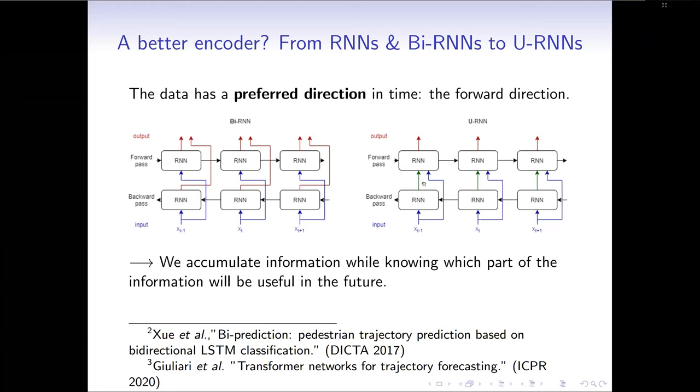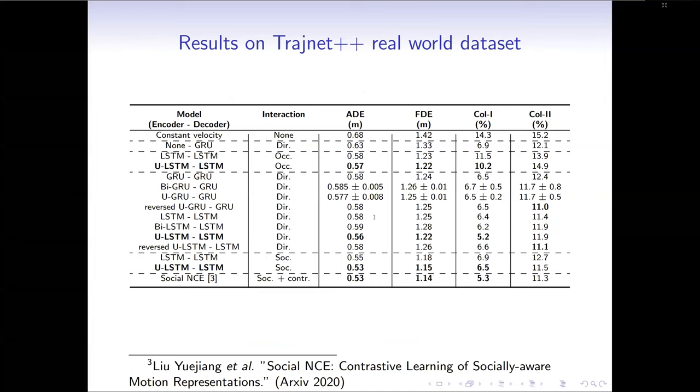So the idea behind our approach, the URNN on the right side of the figure, is to use during the forward pass information about the future that was acquired during the backward pass. And actually it allows us to accumulate information while knowing which part of the information will be useful in the future, and this with respect to the preferred direction of the data. Of course there were other approaches that have worked on the sequence encoder, such as the transformer or one-dimensional convolution, but they did not really and could not take into account the interaction mechanism which is obviously essential for trajectory prediction. And in our case, we only worked on a portion of the pipeline and we kept all the information brought by the interaction encoder.